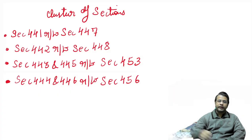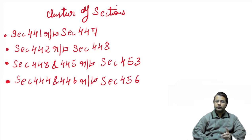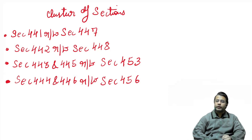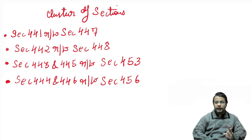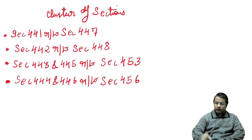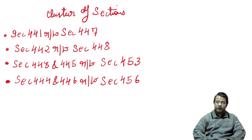इसका थोड़ा सा cluster of sections से बनता है। Section 441 को हम लोग read with करेंगे 447 के साथ — 441 की punishment है 447 में। फिर 442 को read with करेंगे Section 448 के साथ। फिर 443 and 445 read with होगा Section 453 के साथ। 444 and 446 read with होगा Section 456 के साथ। जो भी read with sections हैं, उनसे punishments निकलेंगी। इसको आप लोग screenshot ले लीजिए — बहुत helpful रहेगा आप लोगों को punishment याद करने में।